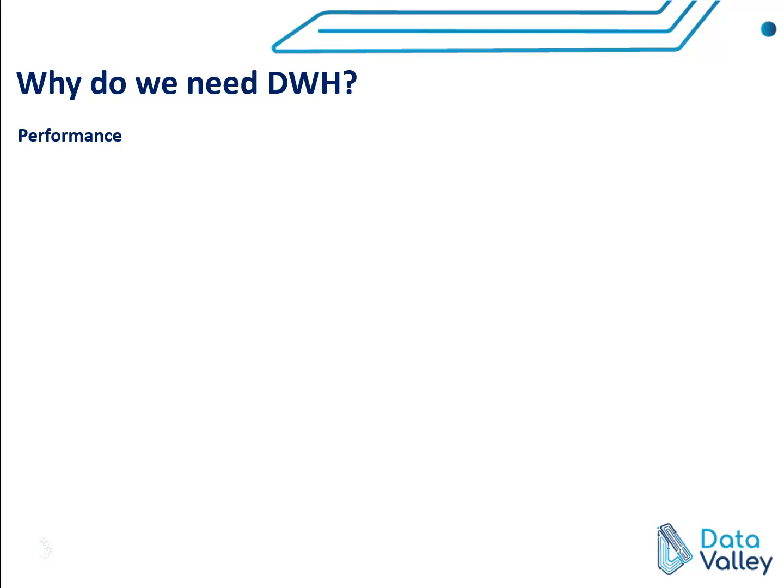Second, information is customer behavior. Any organization that provides a service or product needs to understand customer behavior — how the customer is behaving and interacting with the organization's product or service. So why are these two types of information important? Because to set strategic goals for your organization, you need to understand how the organization is performing and how the customer behaves with your product and service.